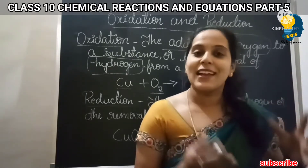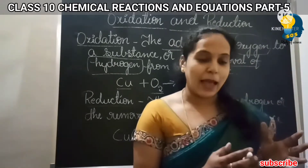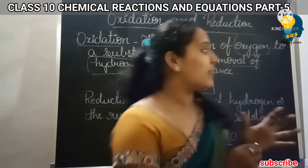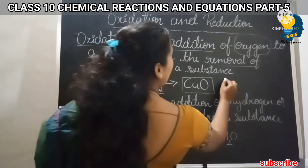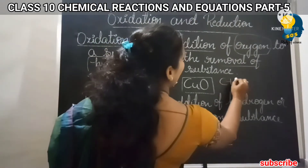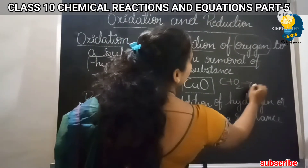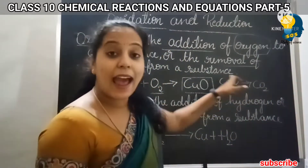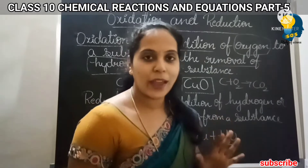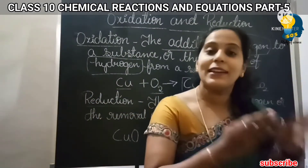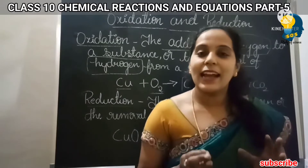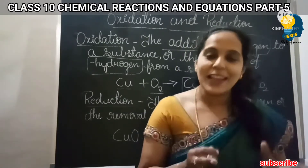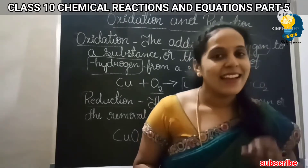So now we will take an example of burning of charcoal. Carbon is being added by oxygen, so it is also an oxidation reaction because oxygen is adding to the carbon. A few more examples: magnesium burns in the presence of oxygen to form magnesium oxide — addition of oxygen is taking place, so it is called an oxidation reaction.